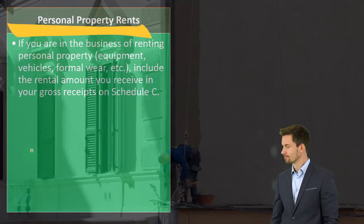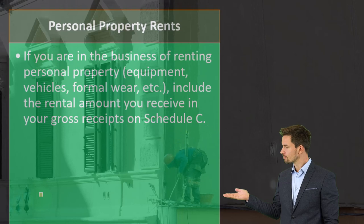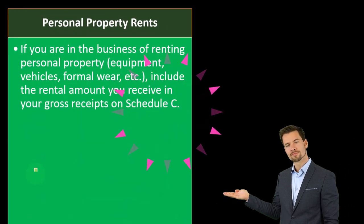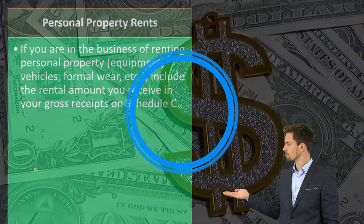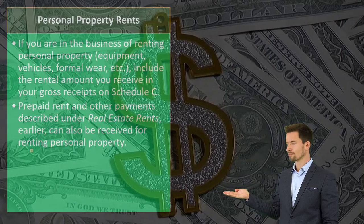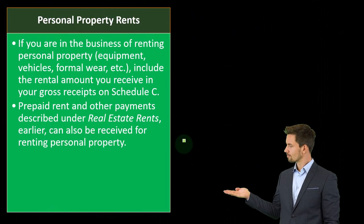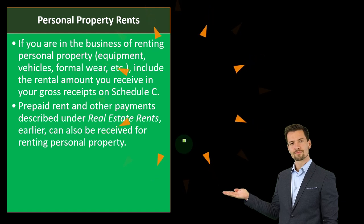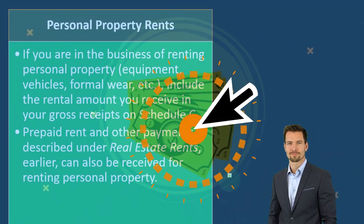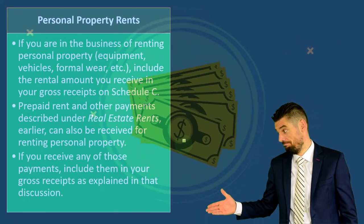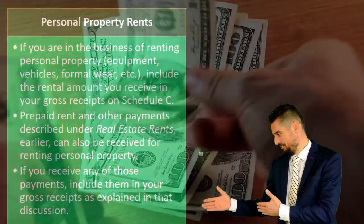Personal property rents: if you are in the business of renting personal property — equipment, vehicles, formal wear — include the rental amounts you received in your gross receipts on Schedule C. These are clearly active business situations, unlike Schedule E, so you are subject to self-employment tax generally and are not subject to the passive income rules. Prepaid rent rules described under real estate rents also apply here — the IRS wants their money when you receive it, even in a prepayment format.